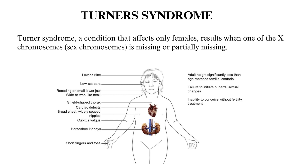The most common feature of Turner's syndrome is short stature, which becomes evident by about age 5. An early loss of ovarian function — ovarian hypofunction or premature ovarian failure — is also very common.